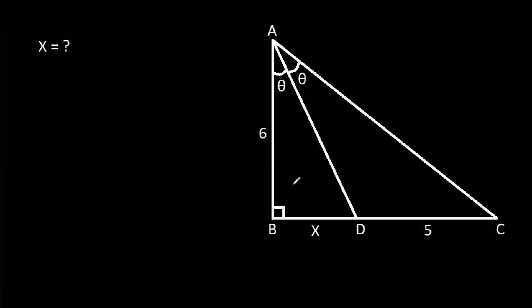In this video, we have been given that angle BAD is theta, angle CAD is theta, AB is 6, CD is 5, and BD is X. We have to find X.